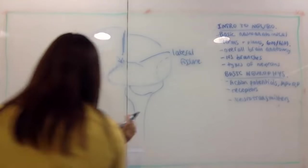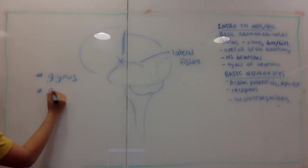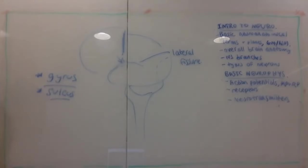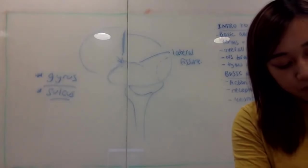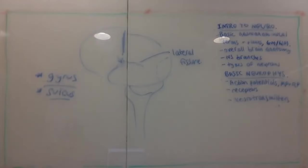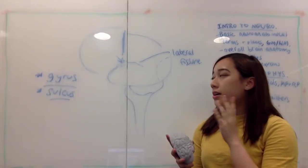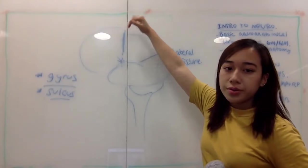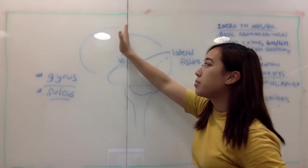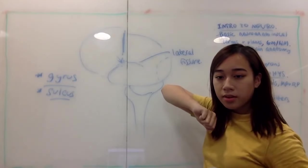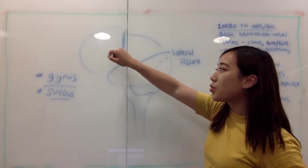I accidentally used two terms without explaining them: gyrus and sulcus. There is a main groove in the middle of the brain — does anyone know what that groove is called, the one that forms the border between the frontal and parietal lobes? That groove is called the central sulcus.